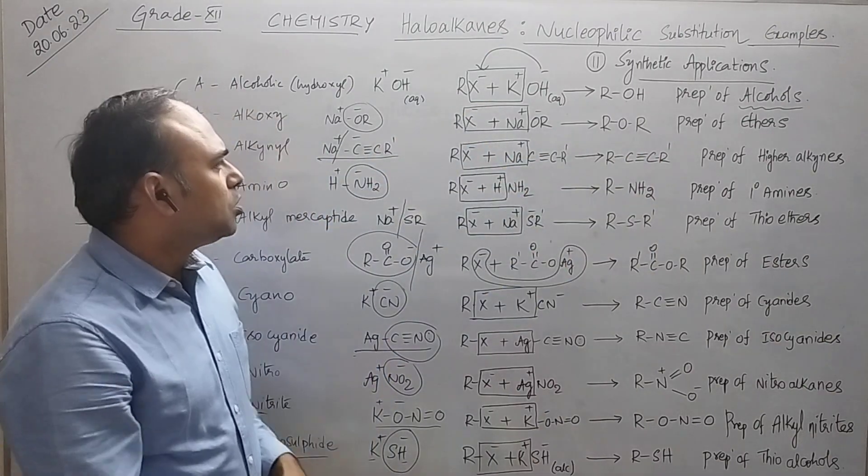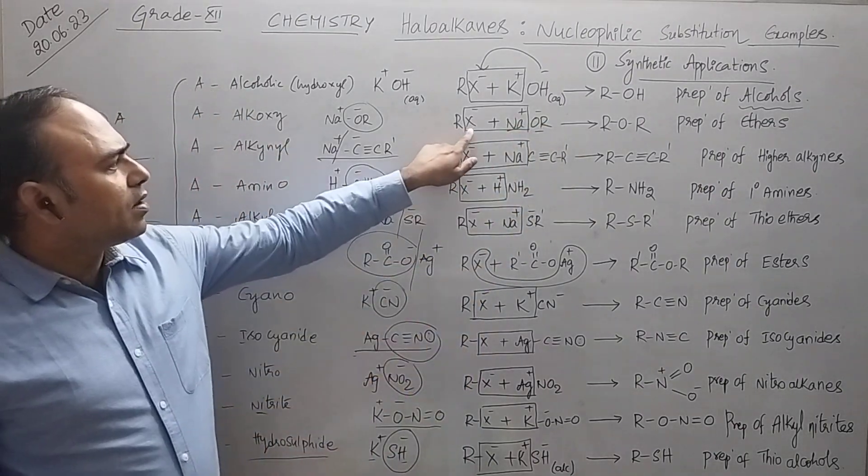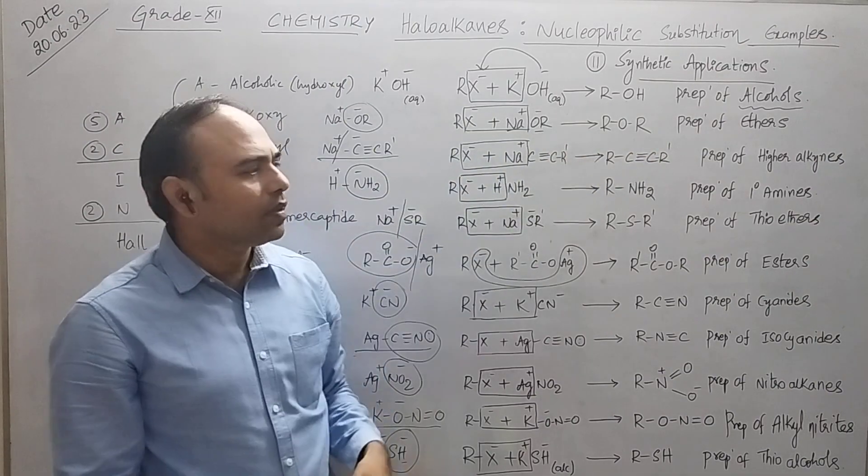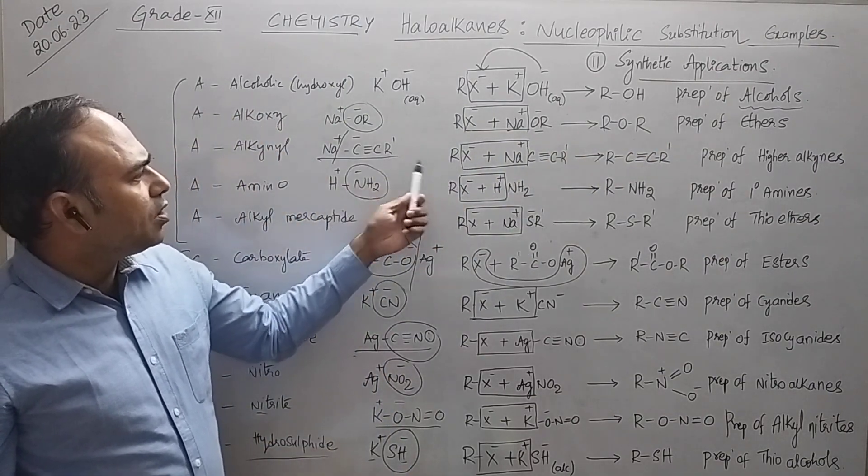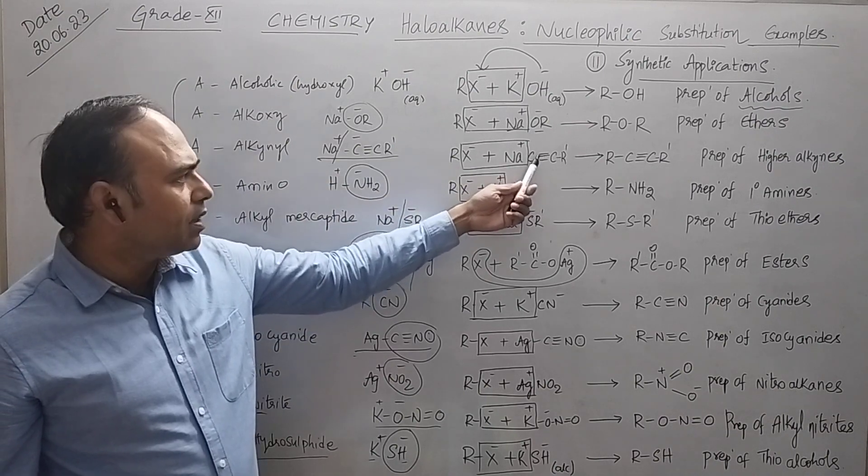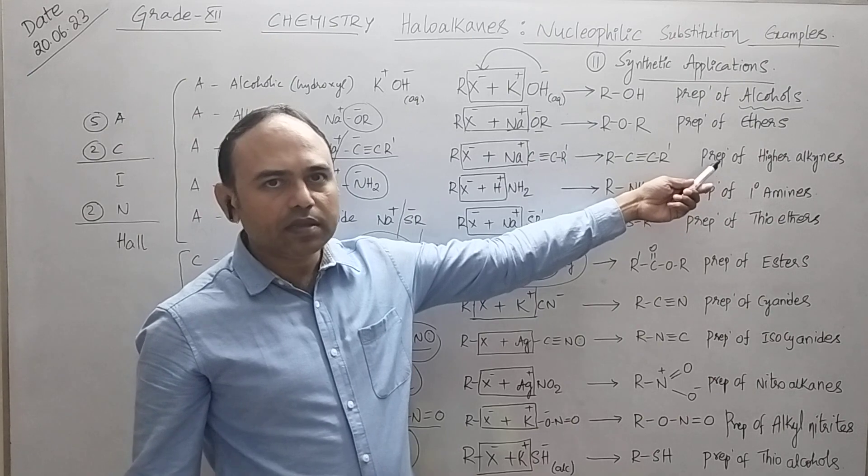Now second one, the preparation of ethers. So in this condition you have taken sodium alkoxide and remove NaX, you will get ethers. Next, third one, take haloalkanes and you have sodium alkanide, so remove NaX and you will get higher alkanes in the third application.